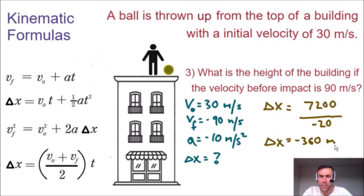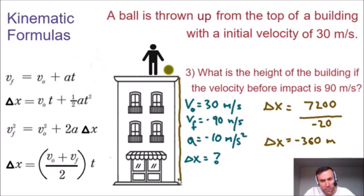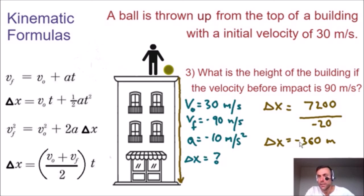The distance has a negative value because we assigned the downward direction as negative. We measured from the top of the building to the bottom, so the negative sign indicates direction. The building is actually 360 meters tall — don't let the negative value confuse you. So the solution to our problem is that the building is 360 meters tall.